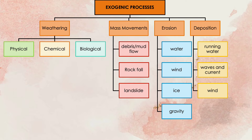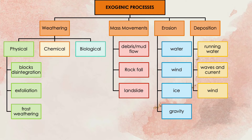Going back to weathering, weathering is the breaking down or dissolving of rocks and minerals on Earth's surface. It can be done by three different means. For physical means, it involves block disintegration, exfoliation, and frost weathering.